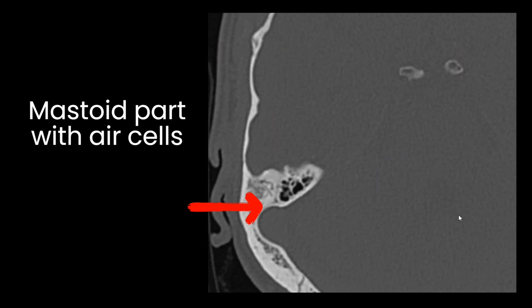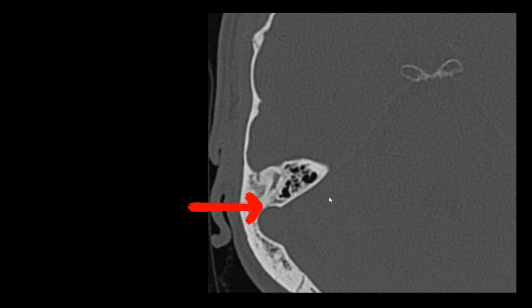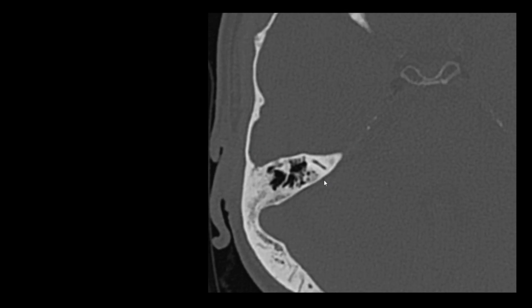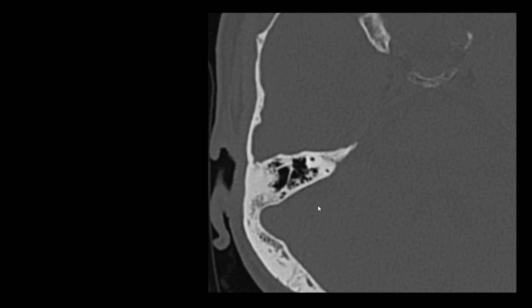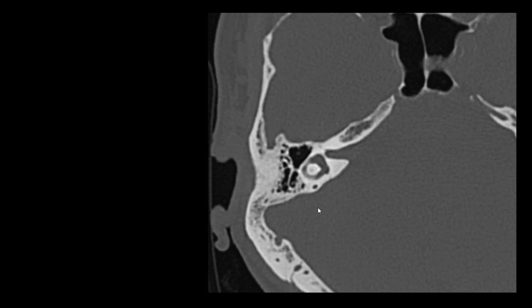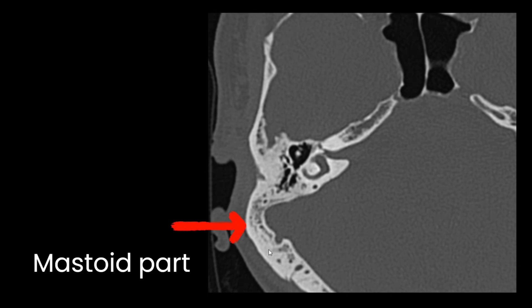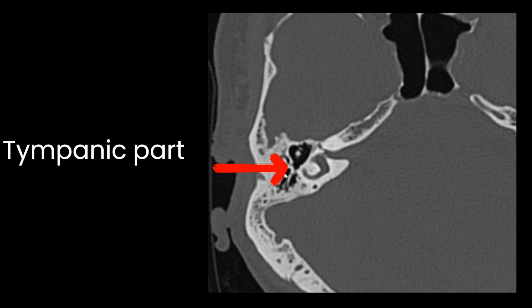We will see these temporal bone parts on axial HRCT sections. Here we can see the mastoid part of temporal bone with mastoid air cells — air-filled cells with bony lamellae in between. As we move down, the mastoid part continues. Now the middle ear sections have appeared; this is still the mastoid part up to the mastoid process, and where the middle ear exists is the tympanic part of temporal bone.